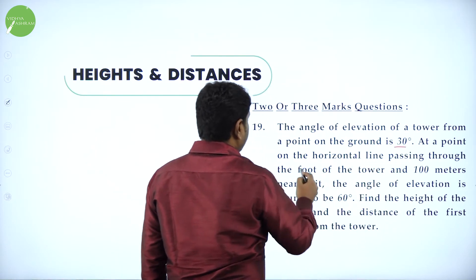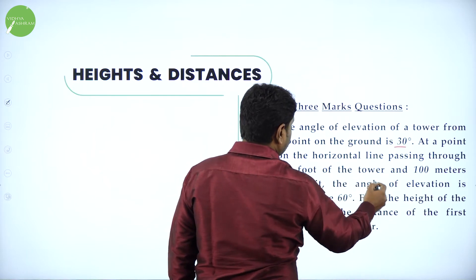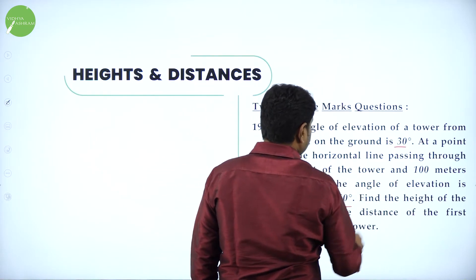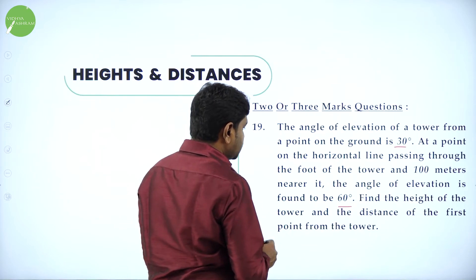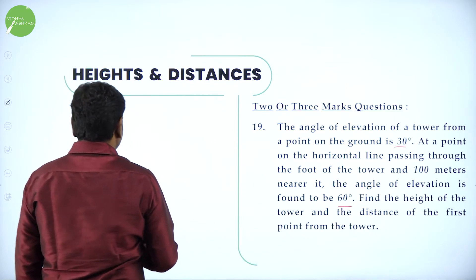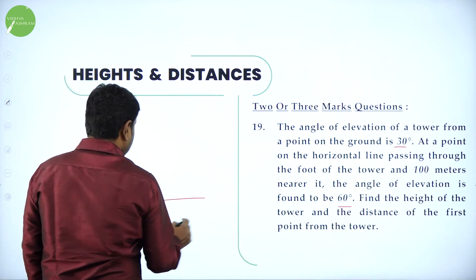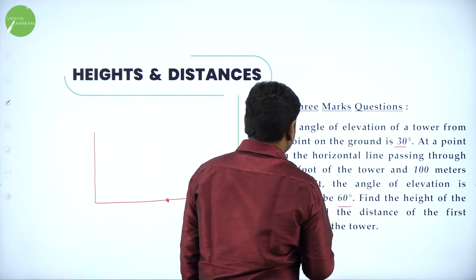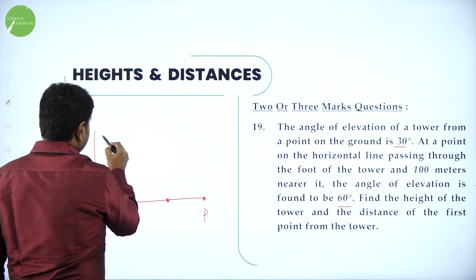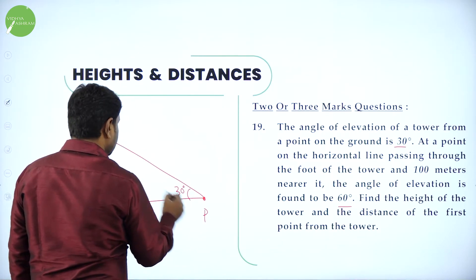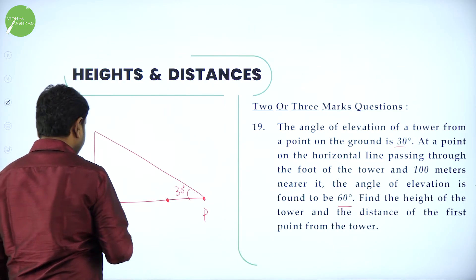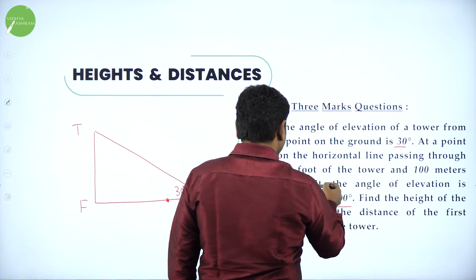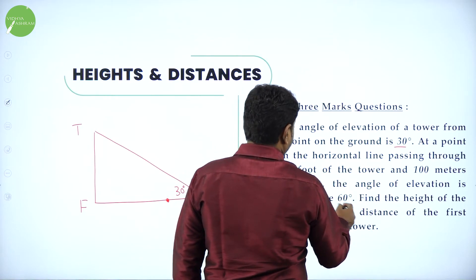Next problem: The angle of elevation of a tower from a point on the ground is 30 degrees. At a point on the horizontal line passing through the foot of the tower and 100 meters nearer to it, the angle of elevation is 60 degrees. Find the height of the tower and the distance of the first point from the tower.